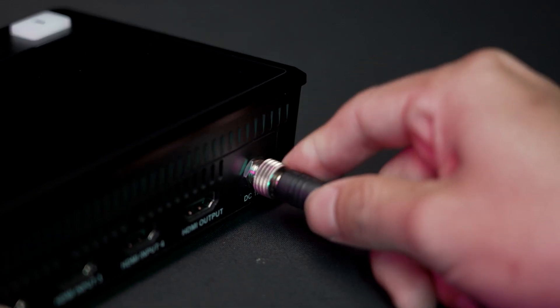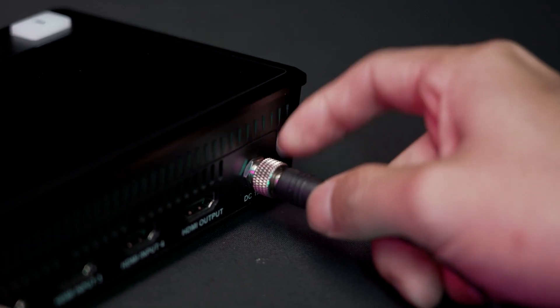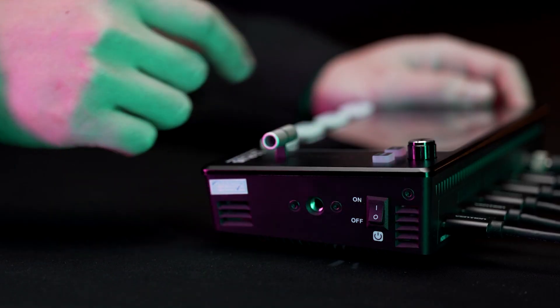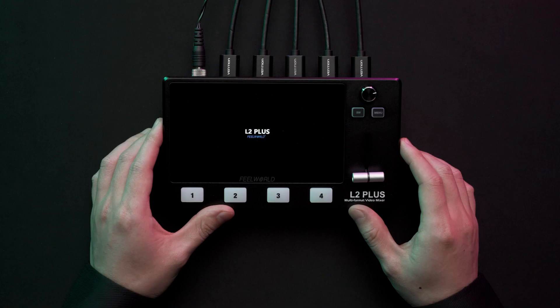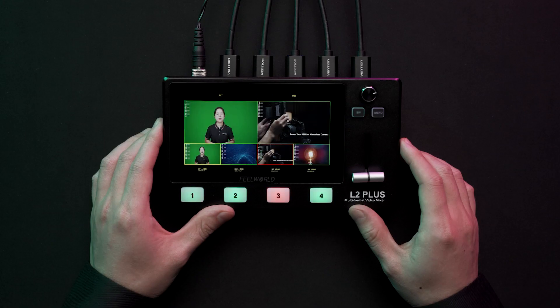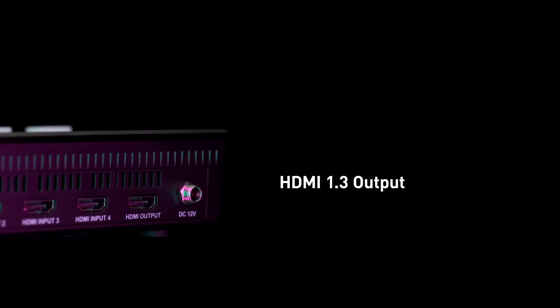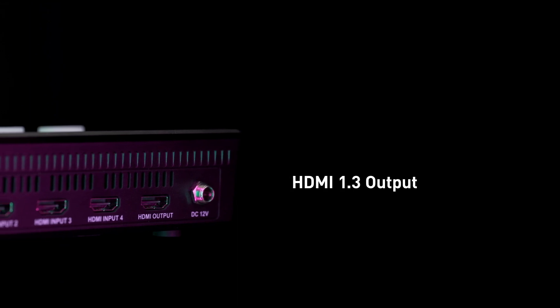First, attach DC power to L2 Plus and power on. Please tighten the power connector to ensure power supply. There are four HDMI inputs. You can connect the PC, camera, and other input sources to the HDMI input connector, or use HDMI output for preview monitoring.